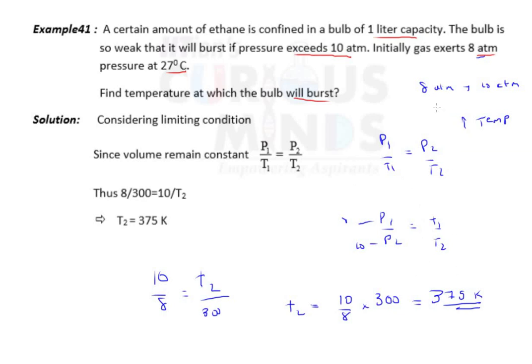There will be an increase in pressure from 8 to 10 atm, and this 10 atm will then result in bursting of the bulb. So you can see the limiting condition is what? Volume remains constant. This was the catch of the question. But why will the bulb burst? Because the volume is fixed.